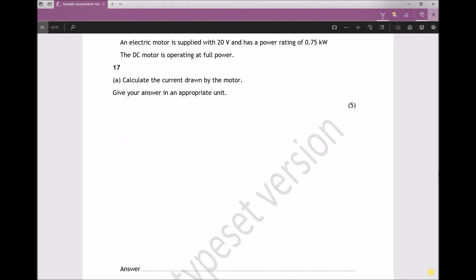Question 17 states that an electric motor is supplied with 20 volts and has a power rating of 0.75 kilowatts. The DC motor is operating at full power. The first part of question 17 asks us to calculate the current drawn by the motor and give your answer in an appropriate unit.